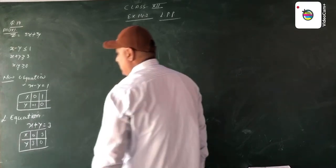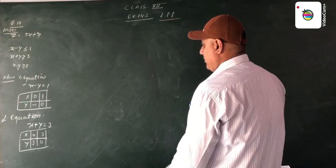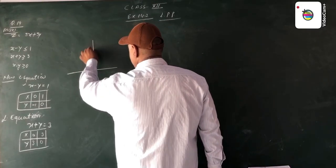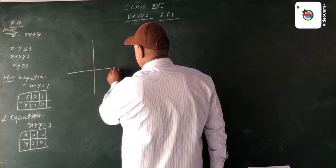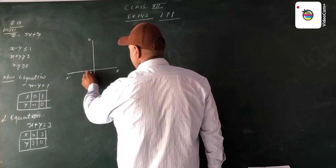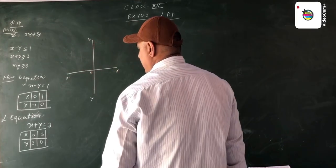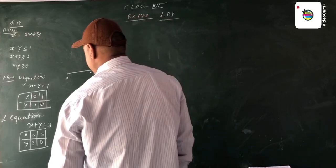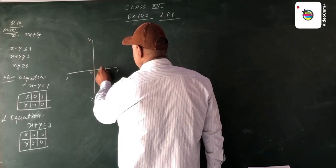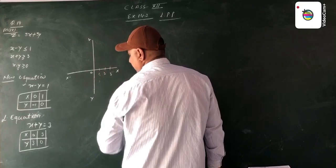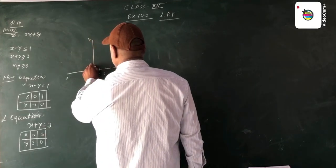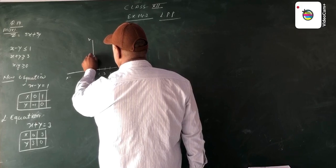Now we solve these two equations by graph. This is the x-axis, this is the y-axis, with x, x-dash, y, y-dash, and the origin. The highest positive value of x is 3, so we mark 1, 2, and 3. The y value is also 3 positive, marking 1, 2, and 3.